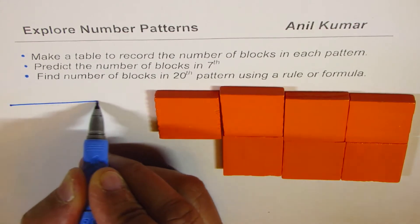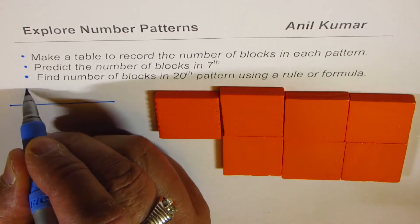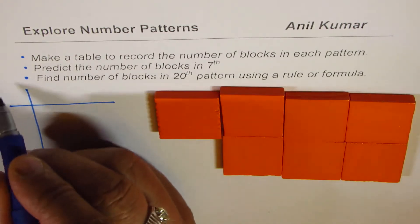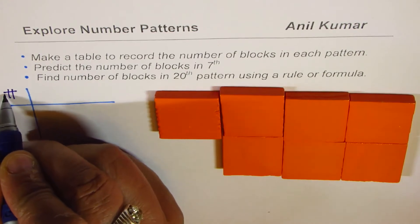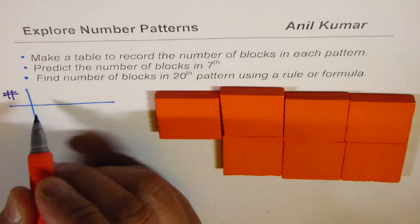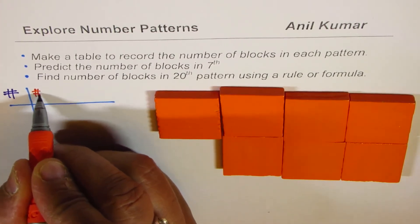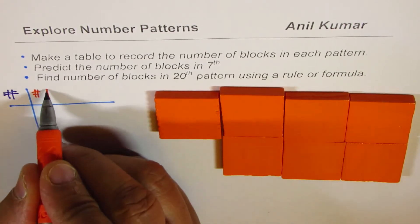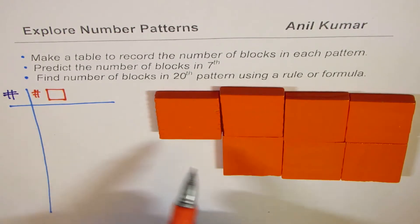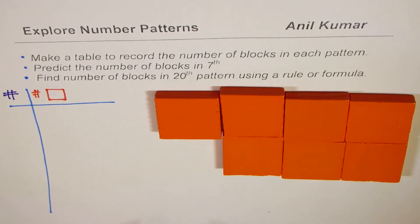The table could be of this form — we'll use a variety of tables. We are going to write the pattern number in the first column, and in the second column we'll write the number of squares. We'll also analyze how the pattern grows and how to predict the number of blocks in the seventh and twentieth pattern.